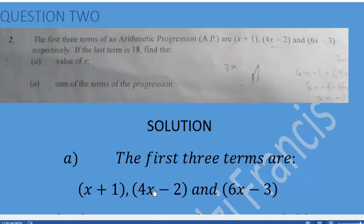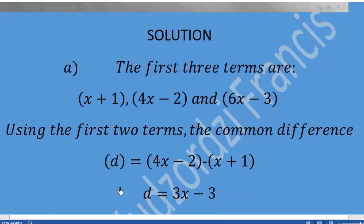We know we can always find a common difference by taking any two subsequent terms. So the first and second terms are subsequent, and the second and third are also subsequent. We take 4x-2 minus (x+1), which gives us a common difference. So 4x-2 minus x+1 gives us 4x minus x which is 3x, and negative 2 minus 1 gives us negative 3.